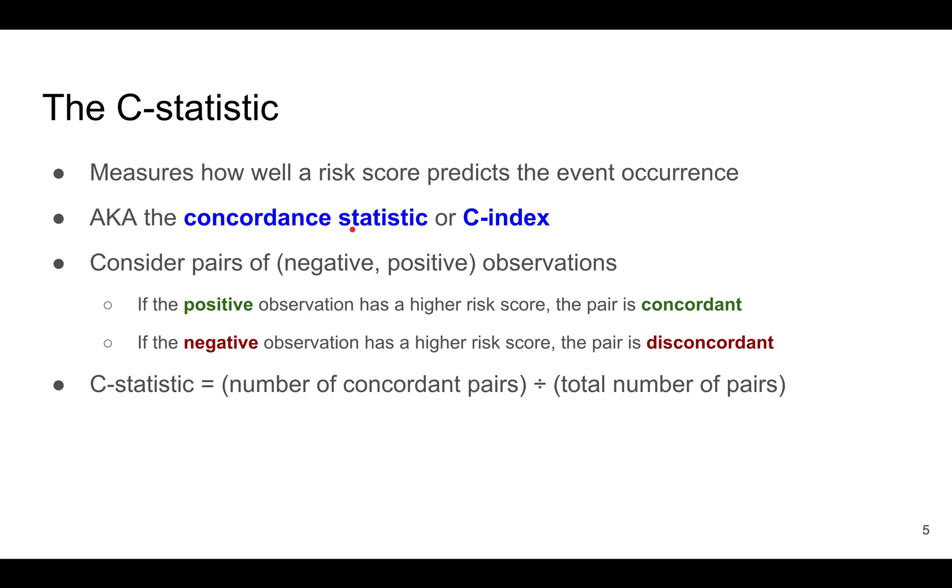Basically, this C statistic is defined in the following way. We need to consider all possible pairs of negative and positive observations. Negative means the event didn't occur. Positive means the event did occur. If the positive observation has a higher risk score than the negative observation, then this pair is concordant. But if the negative observation has a higher risk score than the positive observation, then the pair is discordant. So basically, the C statistic is defined as the number of concordant pairs divided by the total number of negative and positive pairs.